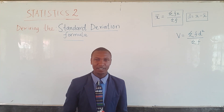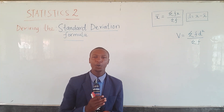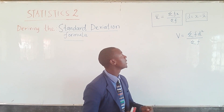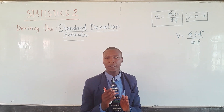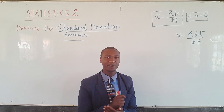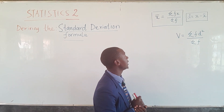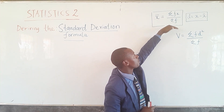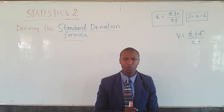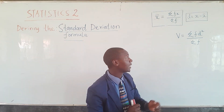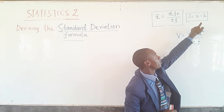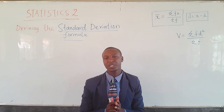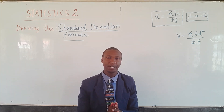Before we derive the standard deviation formula, there are some formulas we must have gone through before. The first one is x-bar, or what we call the mean of a given data. The mean is given as summation of fx divided by the summation of f. We also need to know that d equals x minus x-bar, where d represents the deviation from the mean.